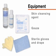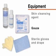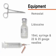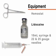For sterile preparation of the site and administration of anesthesia, you will need a skin cleansing agent, sterile gauze, sterile gloves, a sterile drape, a hemostat (which is optional), 1 or 2% lidocaine, and a 10 milliliter syringe with a 22 to 25 gauge needle.